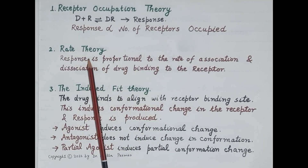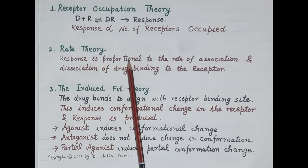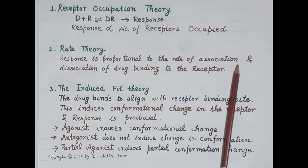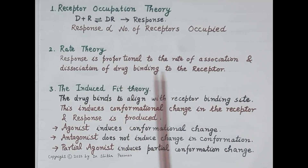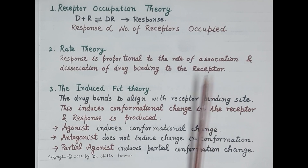The second theory is the rate theory. It states that the response produced by a drug is proportional to the rate of association and dissociation of drug binding to the receptor. If association occurs for more time, more response is produced.